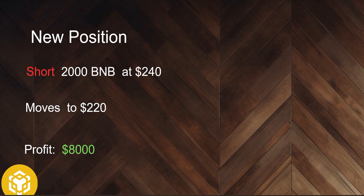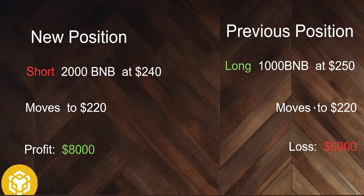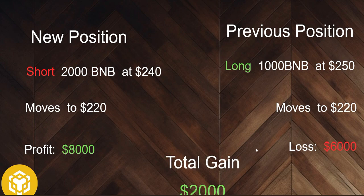This is what happens: our new short position was opened at $240. When it moves to $220, our profit will be $8,000. Because we didn't close our old long position, it also moves to $220, but we incur a total loss of $6,000. This gives us a total gain of $2,000 — by this we have already cancelled out our loss. I'm going to teach you how to use all these strategies later on. All you have to do now is just join our trading community. Thank you trader, see you in the next lesson.